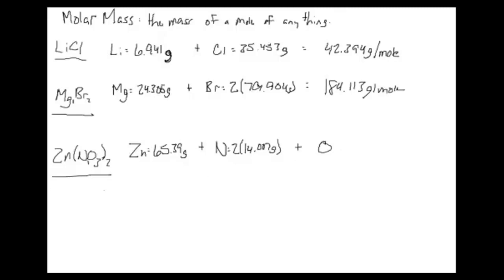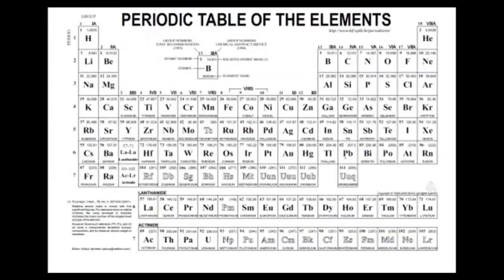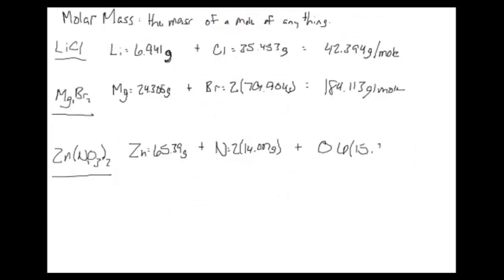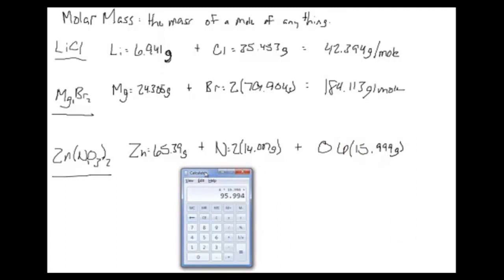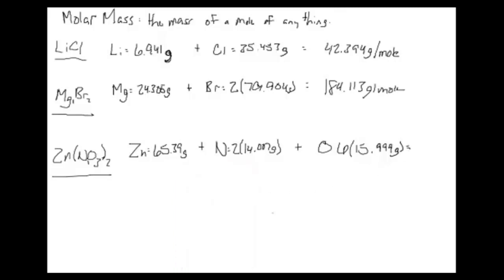For oxygen, we have three oxygens inside the parentheses, times the outer two, giving six oxygens total. This is a spot where students sometimes make the mistake of adding instead of multiplying — remember, parentheses always mean multiply. Oxygen is 15.999 g/mol. So: 6 times 15.999, plus 2 times 14.007 (which is 28.014), plus 65.39 gives us 189.398 grams per mole. That's the molar mass of zinc nitrate. Molar mass is easy to calculate — just distribute parentheses like you do in math.